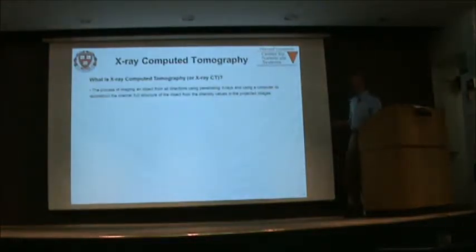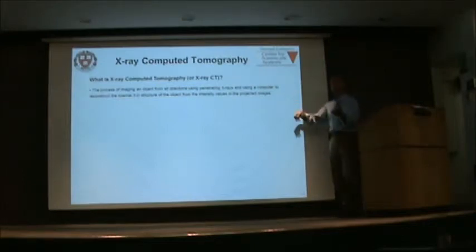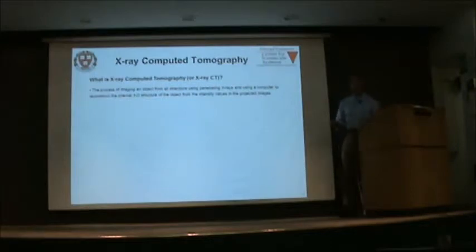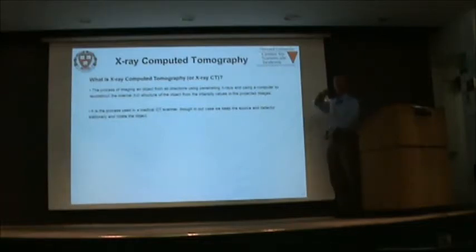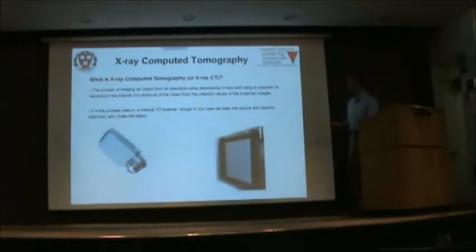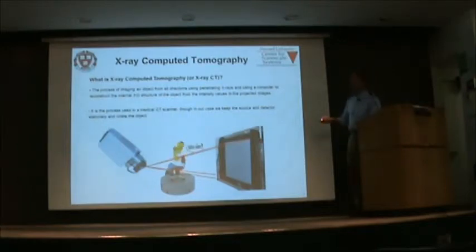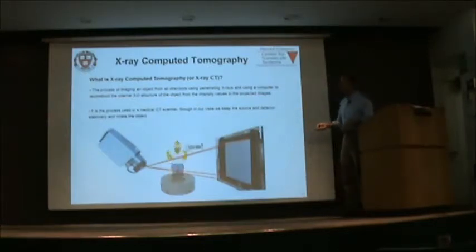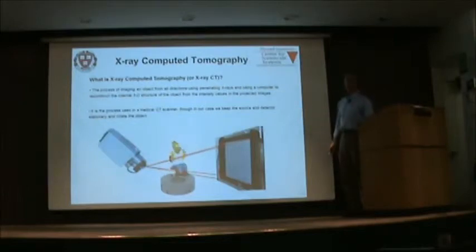That's what X-ray micro-computed tomography, or MicroCT, is: the process of imaging an object from all possible directions, rotating it 360 degrees while taking projection images, then using a computer to reconstruct the internal structure. In medical CT scanners the patient lies still and the detector and source rotate around the person. We don't have that restriction, so we simply rotate the sample — which is more robust because the source and detector are on a very stable frame, and the sample has far less mass to control.